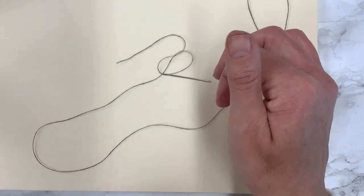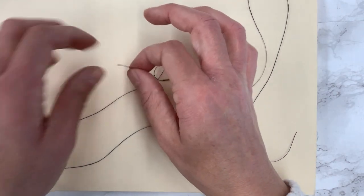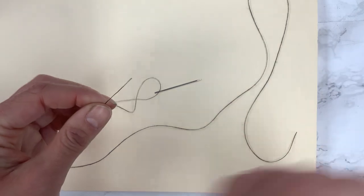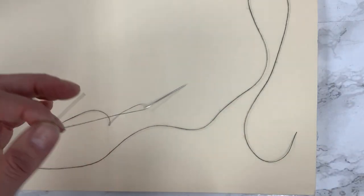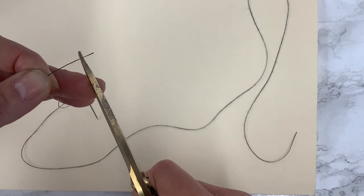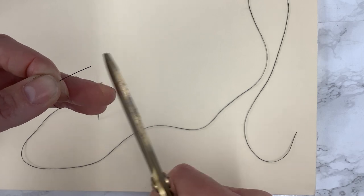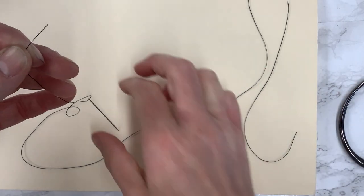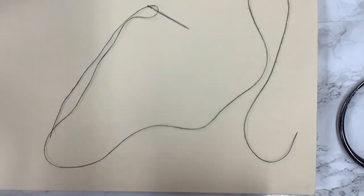If yours isn't going in very easily, sometimes the thread frays a tiny bit when you cut it or maybe you cut it and didn't use it right away. So you can always take your scissors and just give it a little bit of a snip to make sure it's nice and pointy at the end. So I have my needle threaded, that side's good.